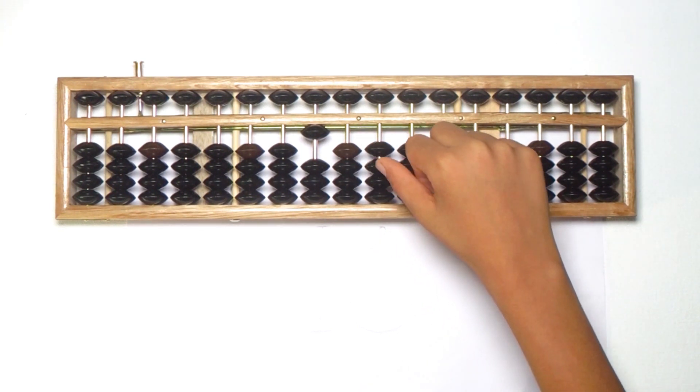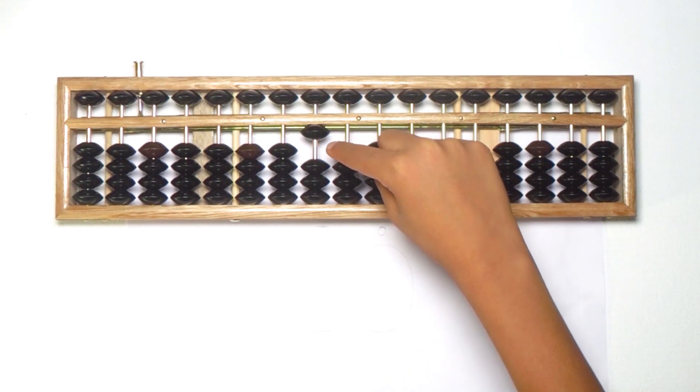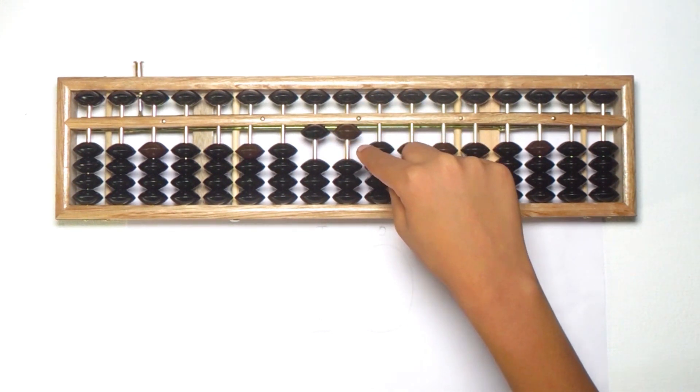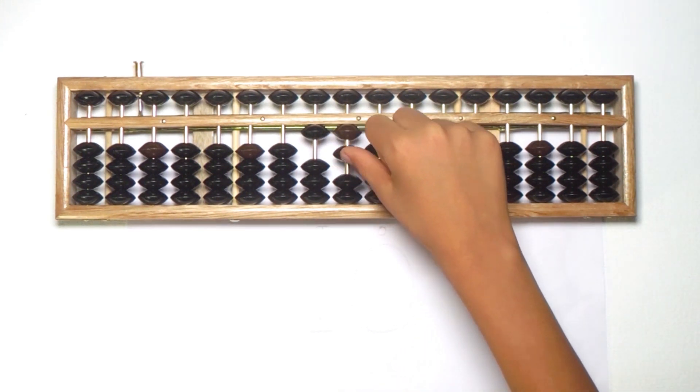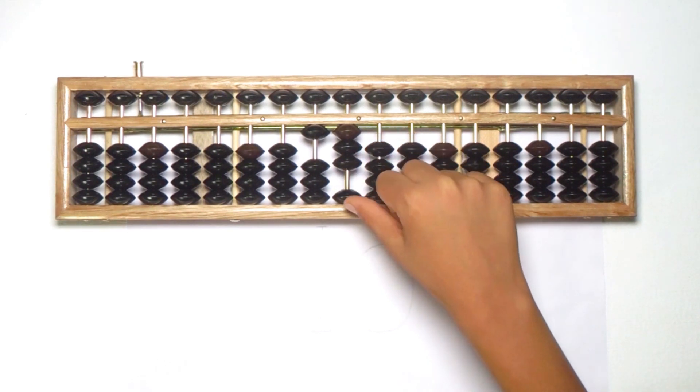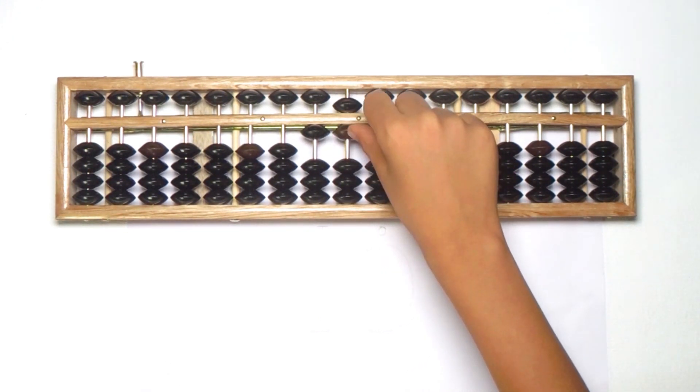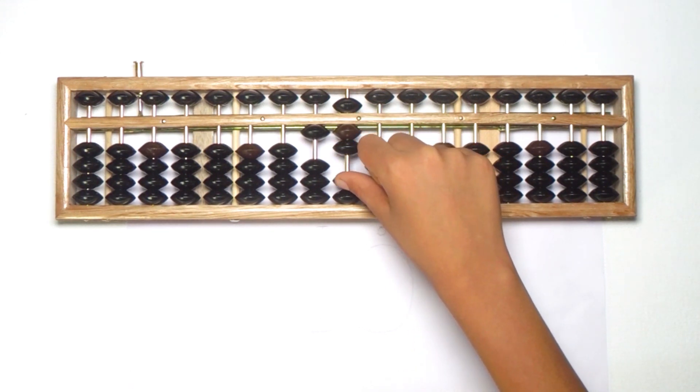To count eleven, we need one at tens place, which is already there, and one at unit place. This is eleven, twelve, thirteen, fourteen, fifteen, sixteen, seventeen, eighteen, nineteen.